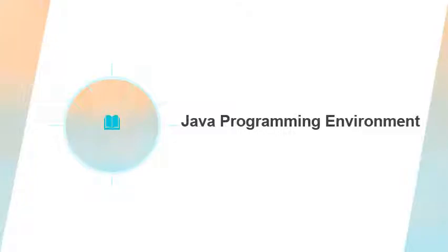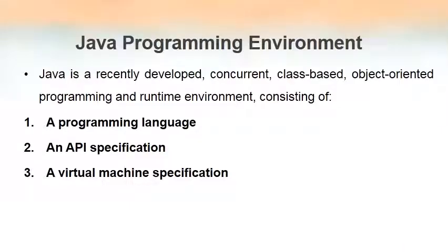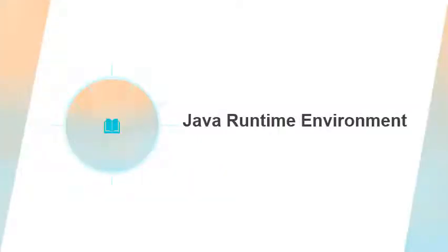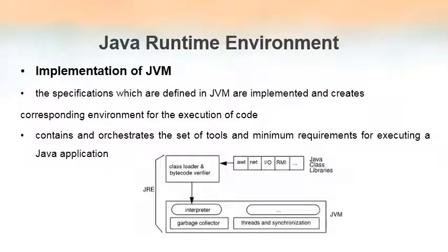The Java programming environment consists of three parts: the Java programming language, an application program interface specification, and a virtual machine specification. When we combine all three, that is known as the Java programming environment. Now, what is the Java runtime environment? The Java runtime environment is the portion that provides the implementation of the JVM — the Java Virtual Machine.